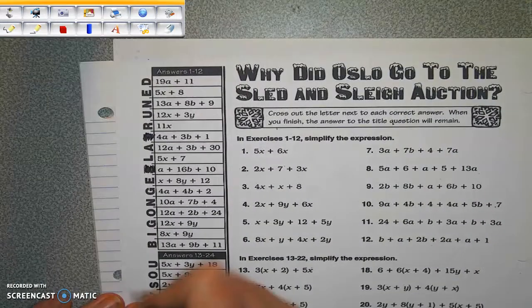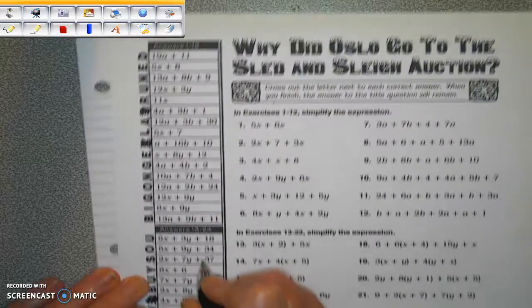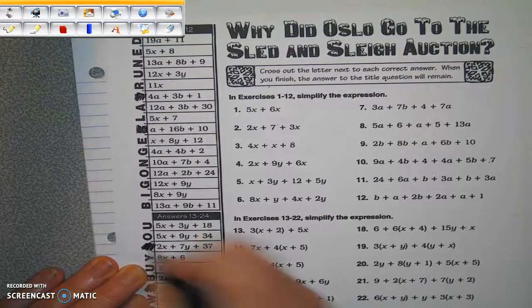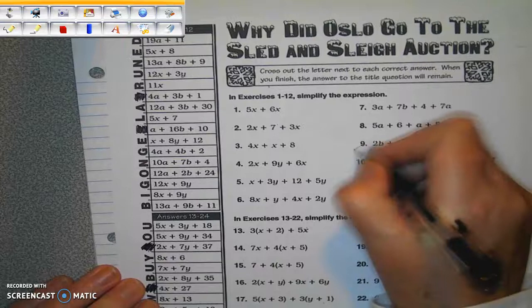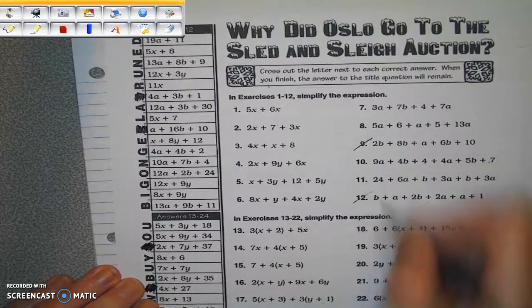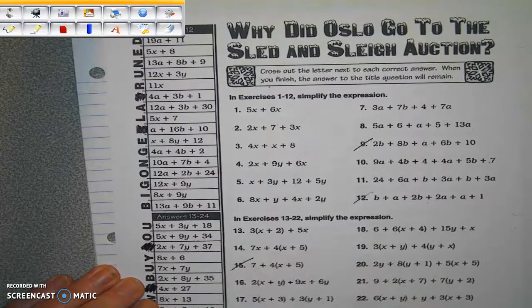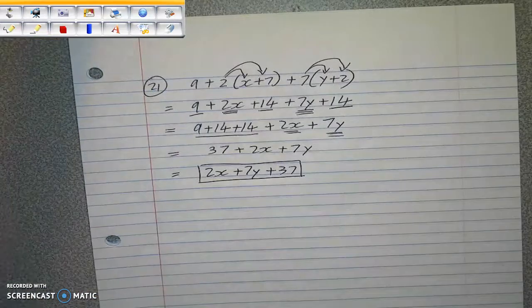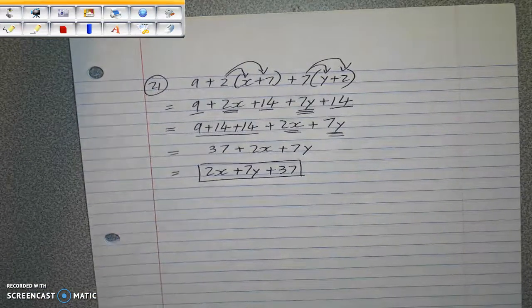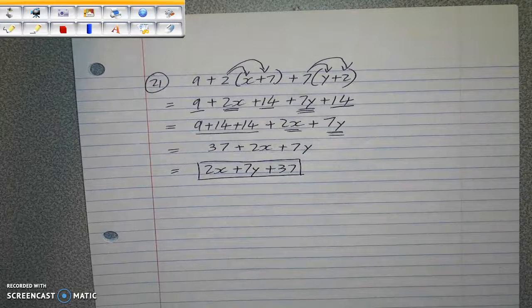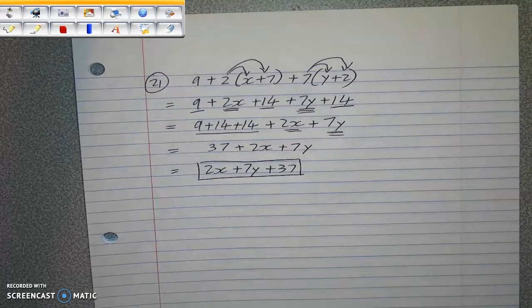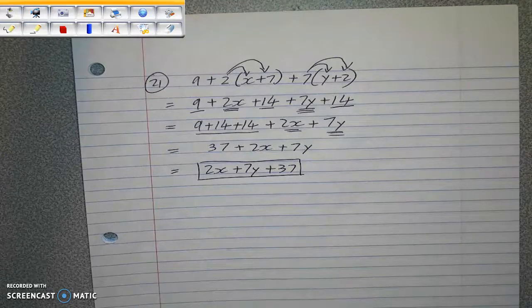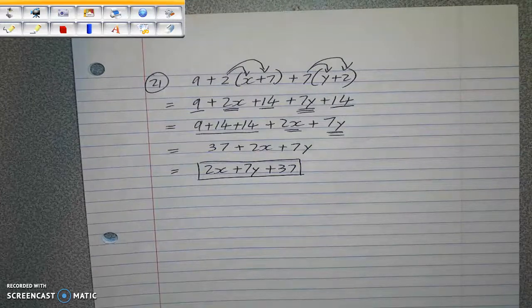And there it is. 2x plus 7y plus 37, right there. And cross out the letter next to it. So we have done number 9, number 12, number 15, and number 21. I will scan in these notes for you so that you can refer to them while you're solving the puzzle. Also scan in the puzzle, of course, and you're going to type your answer into Formative when you are done. Good luck with this today and have a great week, everybody.